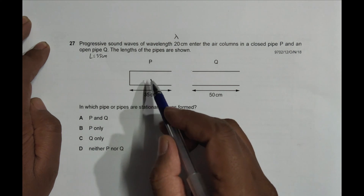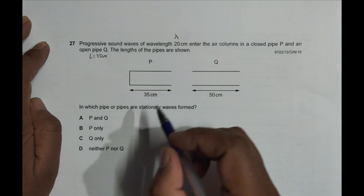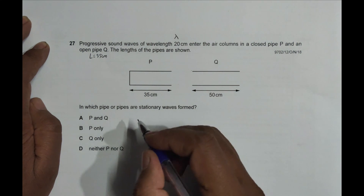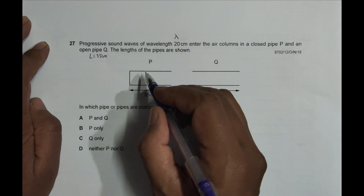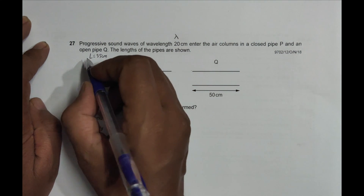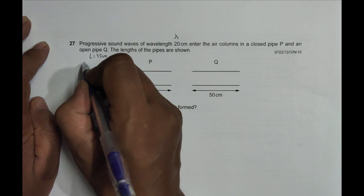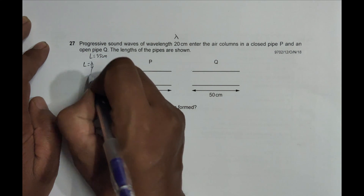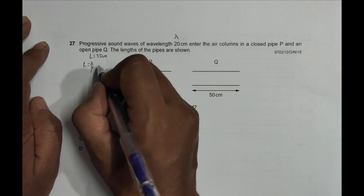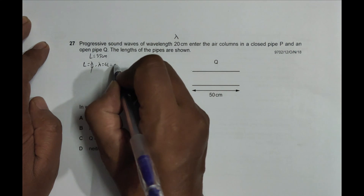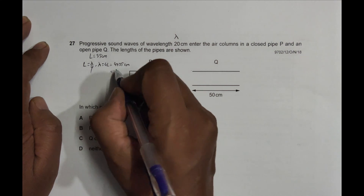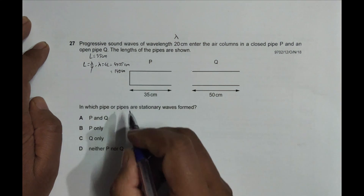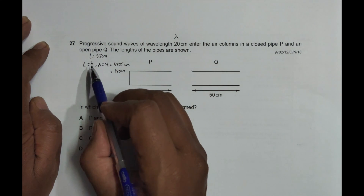We have to investigate in which pipe or pipes stationary waves are possible. For that we need to remember the conditions for formation of stationary waves. For a closed pipe, the first condition is L = λ/4, which means λ = 4L = 4 × 35 cm = 140 centimeters.